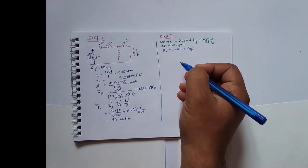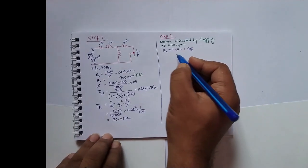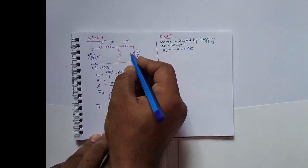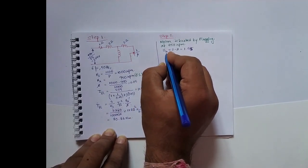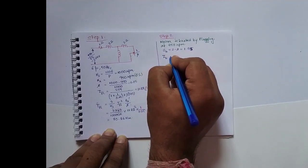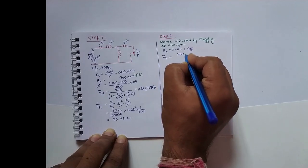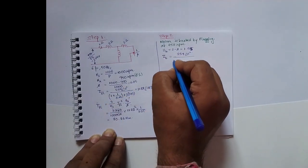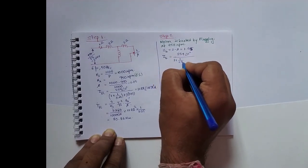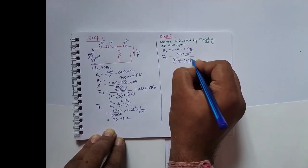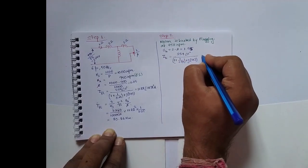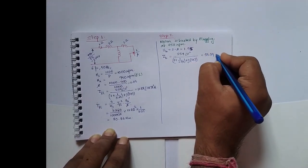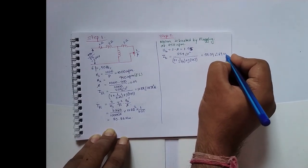If you want to know why the slip is 2 minus s, comment and I will make another video on that. Now with the changed slip, we find the braking current Ib. The voltage remains 254 volts at 0 degrees. Dividing by the impedance: resistive part is 1 plus 1/1.95, reactive part is j(2 + 2), with only the slip changed.